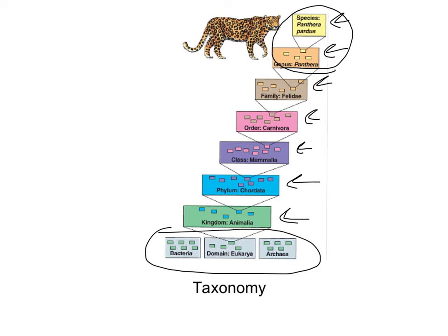The domains are the biggest, broadest category, and they were based on RNA differences. The reason we're talking about taxonomy and classification is because it can lead back to evolutionary history. The links we find by classifying usually align with evolutionary history.